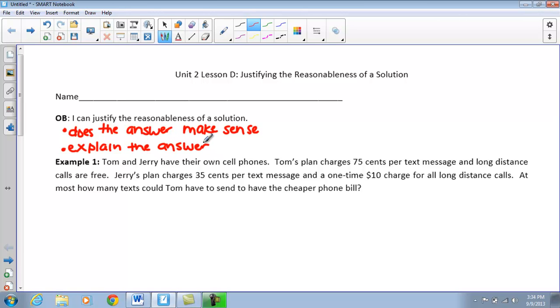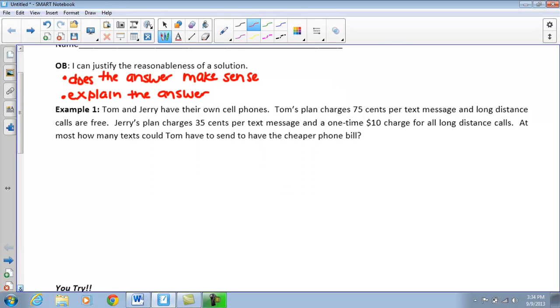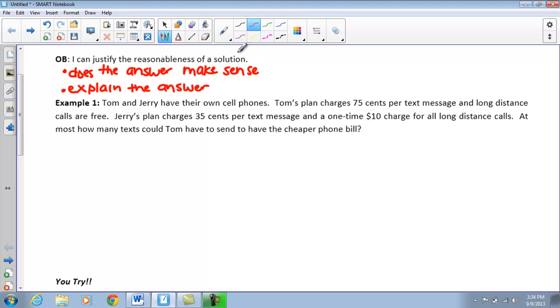Let's take a look at our first example here. Tom and Jerry have their own cell phones. Tom's plan charges $0.75 per text message and long distance calls are free. Then we talk about Jerry.